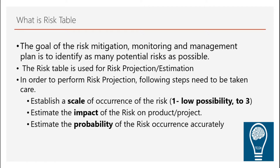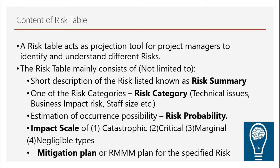Why do we do this? We are supposed to scale different risk levels, estimate impact, and also the probability or occurrence of the risk. The risk table has a very short description of the risk summary. It is used by project managers to identify different types of risk, and the team also has to be aware of those risks, keeping in mind that some mitigation plans are always planned ahead.